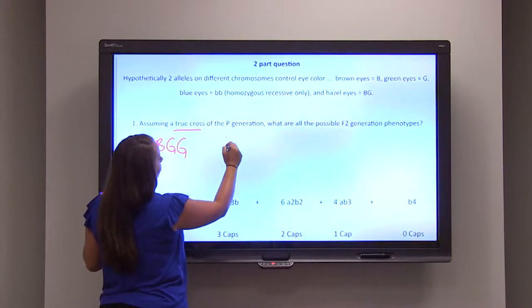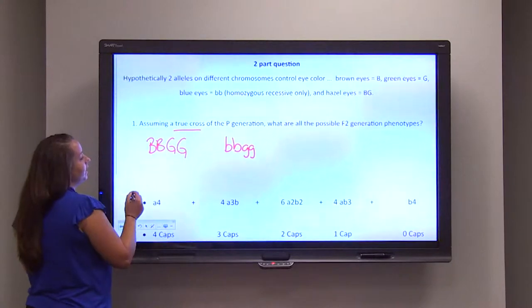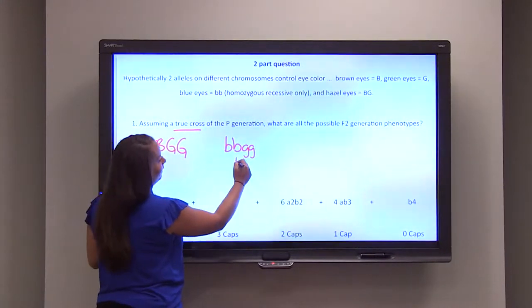All homozygous recessive would be little b, little b, little g, little g. When you look at this, this person will have hazel eyes, this person will have blue eyes.